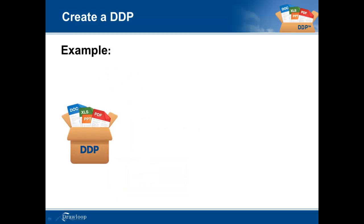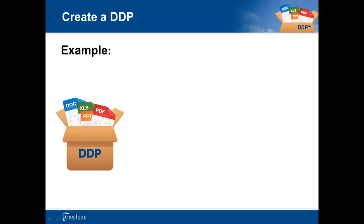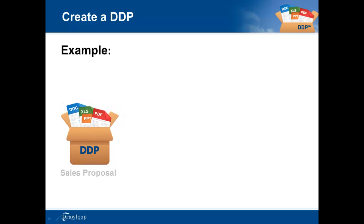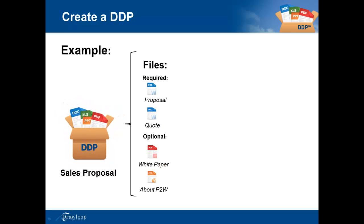In a moment we will begin our walkthrough. We will create a proposal DDP that will consist of four template files, two which will be required and two which will be optional to the end user. The required documents will consist of a proposal and a quote, both in Word format. The optional documents will consist of a white paper document in PDF and a company profile in PowerPoint.